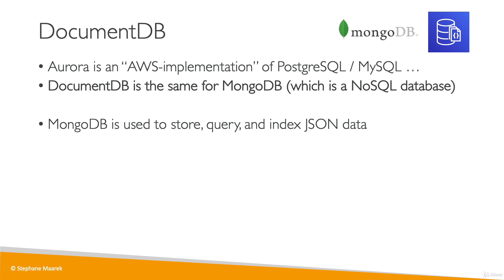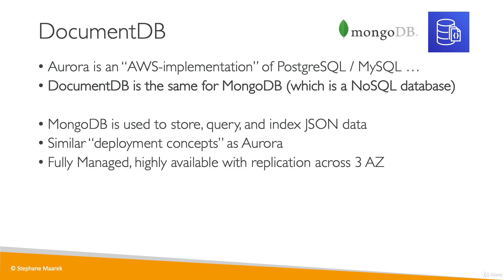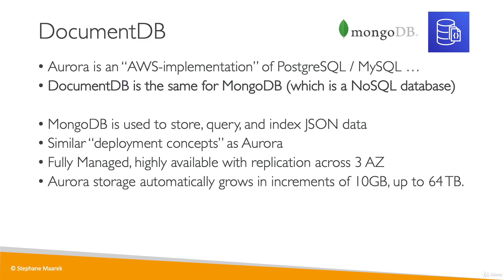MongoDB is used to store, query, and index JSON data. You have the same similar deployment concepts as Aurora with DocumentDB — it's a fully managed database, it's highly available, data is replicated across three availability zones, and the storage will grow automatically in increments of 10 gigabytes, up to 64 terabytes of storage.